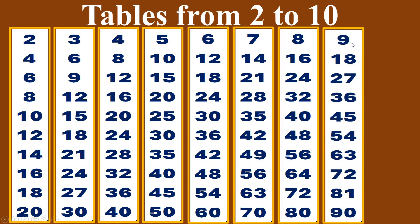Nine times table. Nine ones are nine. Nine twos are eighteen. Nine threes are twenty-seven. Nine fours are thirty-six. Nine fives are forty-five. Nine sixes are fifty-four. Nine sevens are sixty-three. Nine eights are seventy-two. Nine nines are eighty-one. Nine tens are ninety.